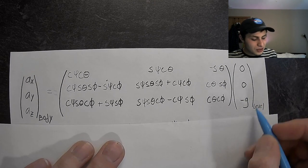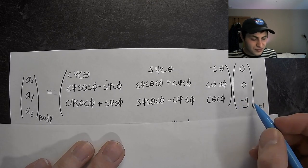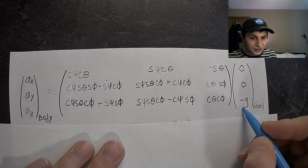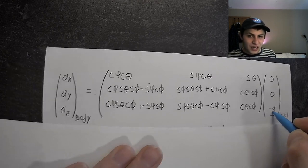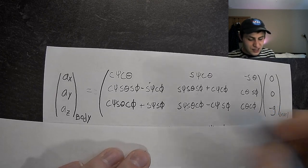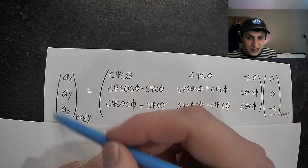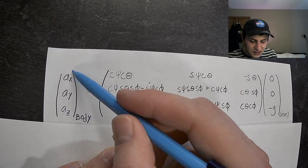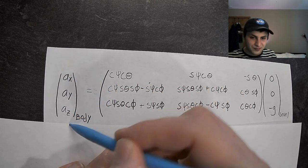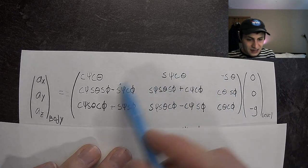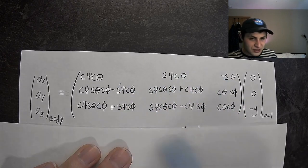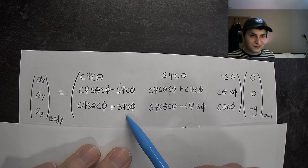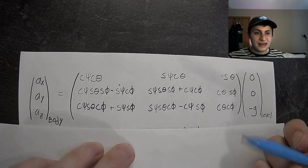In the level coordinate frame, gravity is going to be negative g. These are the accelerometer measurements: ax, ay, and az. And this is the rotation matrix defined by our roll, pitch, and yaw angles.